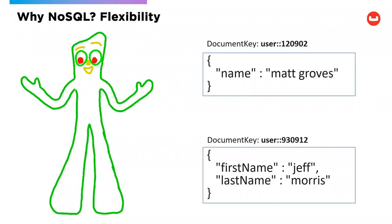Flexibility can be very useful in lots of situations — when pulling data together or integrating data from different sources, you don't have to worry about a small change blowing up the schema or your import process. A document database does not have a rigid schema that the database forces you to follow, so the developer gets more responsibility. That being said, it's not ideal to have documents where some use 'name' and others use 'first name' and 'last name' — we should still have some discipline about our data.